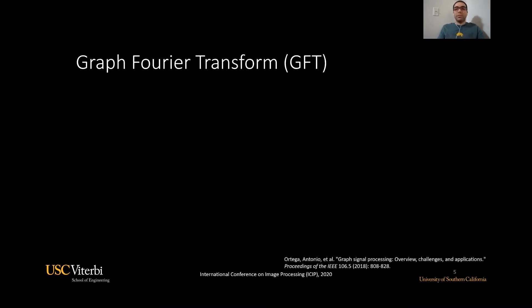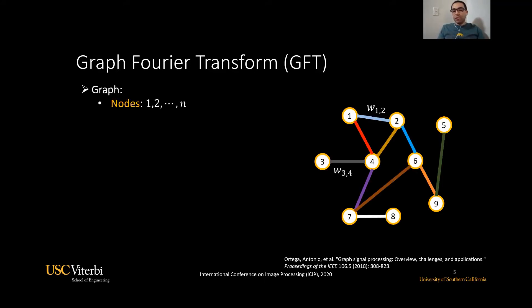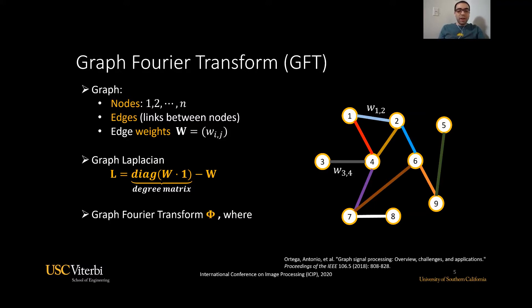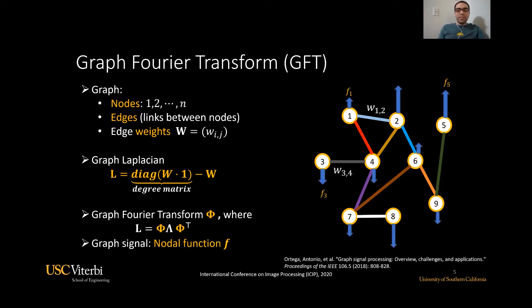The graph Fourier transform is one of the earliest techniques used for compression of point clouds. A graph is a list of nodes, here denoted by circles, edges denoted by lines between the circles, and edge weights, which represent the strength of these links. The graph Laplacian is a matrix that encodes the graph relations. The graph Fourier transform consists of the eigenvectors of the Laplacian. A graph signal is a function on the nodes of a graph, and the goal of graph signal processing is analyzing, studying, and compressing these signals, with the graph Fourier transform being one of the main tools for that purpose.